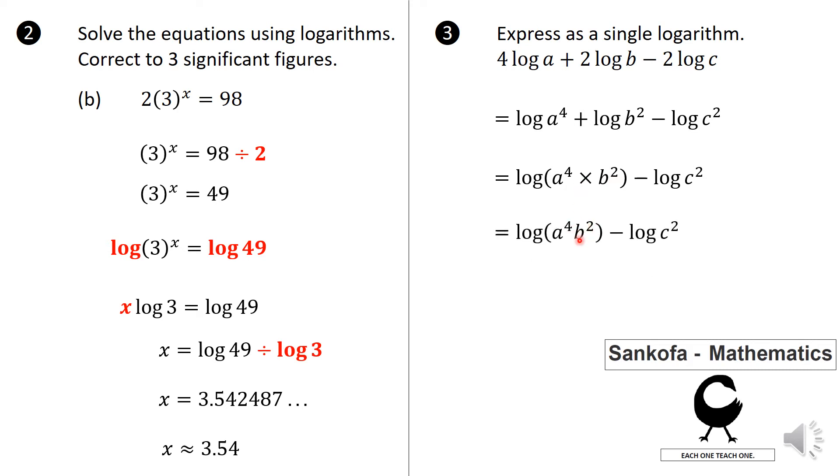Eventually, that gives me a to the power 4, b to the power 2, minus log c squared. So in order for me to get rid of this minus, when you are subtracting logs of the same basis, you are going to divide the numbers only. That means the a raised to the power 4, b squared, upon c squared. Now, this is now written or expressed as a single logarithm.